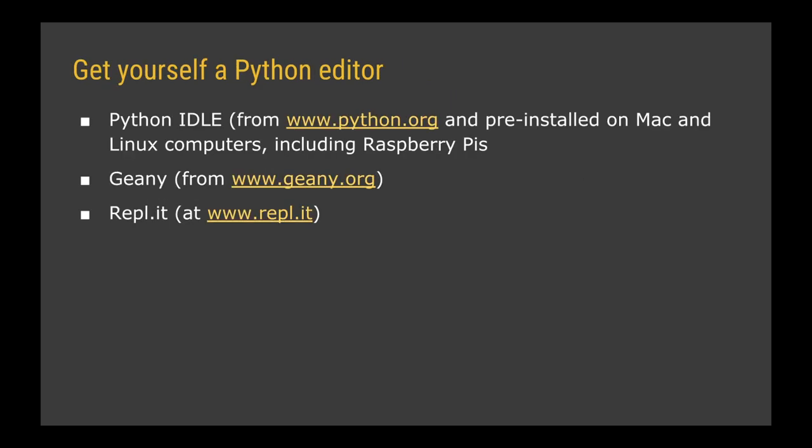We're going to get going quite quickly, so you need to get yourself a Python editor. Python is a text-based programming language. If you've got a Mac or Linux computer like a Raspberry Pi, you've probably got Python installed already. If you're on Windows you can get it from python.org, or you could use something like Genie. My preferred method is to use a website called REPL.IT or Replit — that's R-E-P-L dot I-T — a web app which allows you to program in loads of different languages including Python.